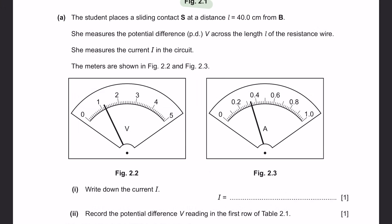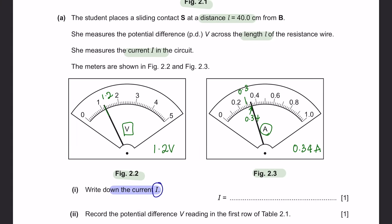Question A. The student places sliding contact S at a distance L equals 40 centimeters from B. She measures the potential difference V across length L and the current in the circuit. The meters are shown in figures 2.2 and 2.3. Part 1: write down the current I. The voltmeter shows 1.2 V and the ammeter shows 0.34 amperes. Since you are asked for current, look at the ammeter. Leave answers in two significant figures.